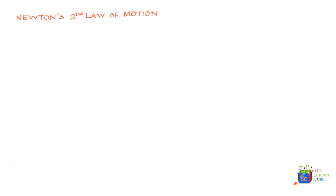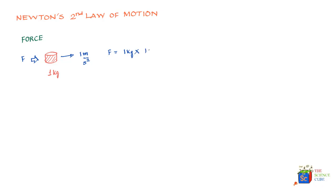Before we dive into Newton's second law of motion, let's try to understand this entity called force a little better. Say you have an object which weighs 1 kilogram, and it is moved to the right with an acceleration of 1 meter per second squared. This acceleration would happen only if a certain force acted on this object. That force F can be expressed as a product of mass — 1 kilogram — multiplied by the acceleration it caused, which is 1 meter per second squared.